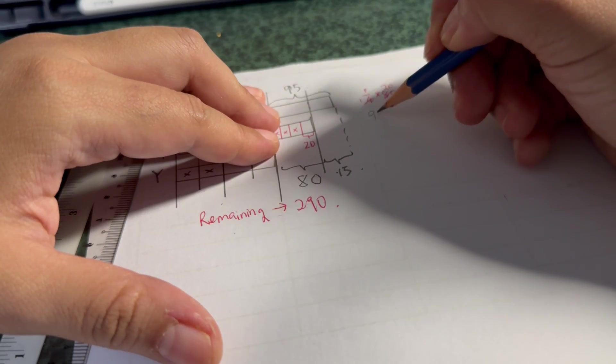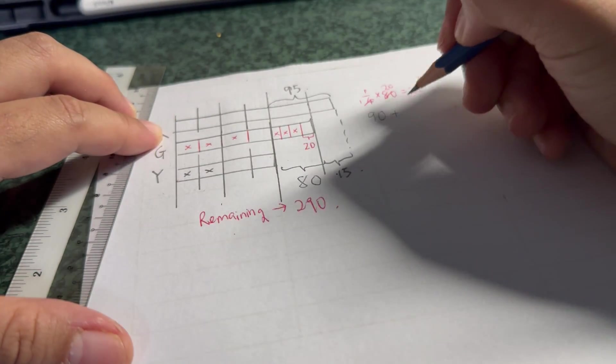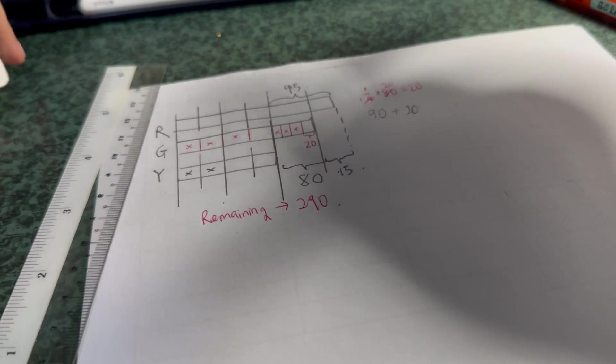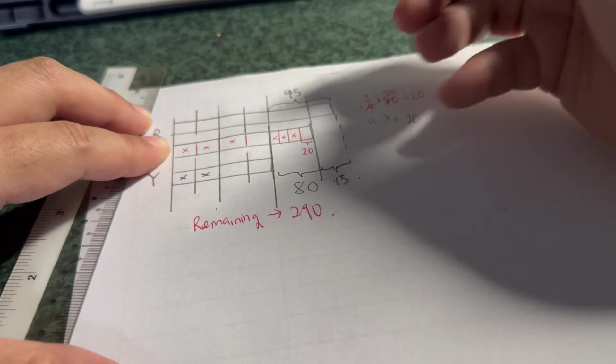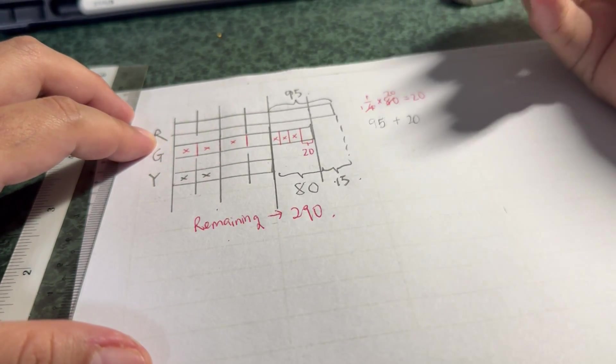So 90 plus—give me a moment—plus 20 equals to, oh sorry, 95. 95 plus 20 is equals to 115.